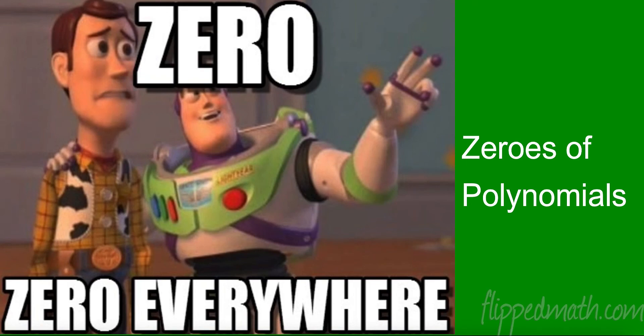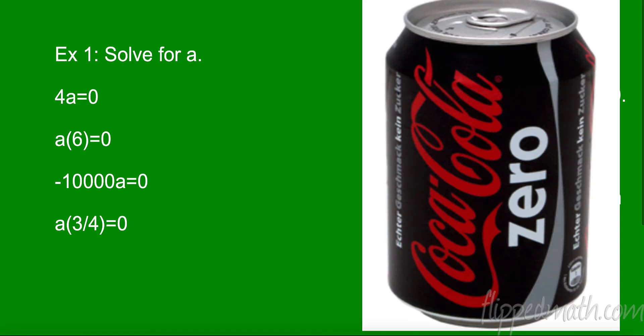Welcome back. We're in the last section of the first unit. We're going to be talking about the zeros of polynomials. Zero is the best mathematical number ever — it's so powerful. You multiply any number by zero and it equals zero. A billion times zero equals zero. Those are super easy. All right, let's talk about zero.